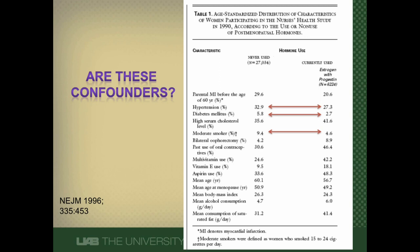So are they confounders? Well, they certainly are. They're unequally distributed between the women who never used hormones and women who do. On average, the women who never used hormones are at higher risk of cardiovascular disease than the women who are currently using hormones.